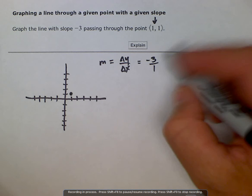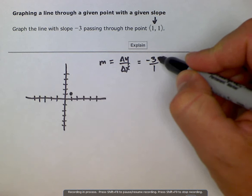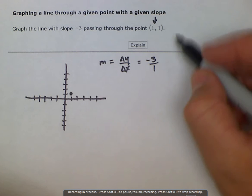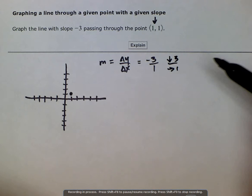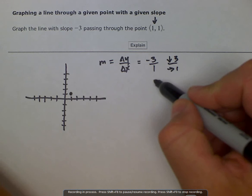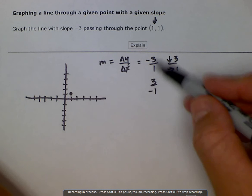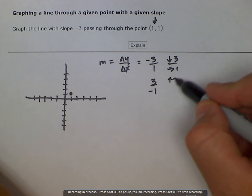So this gives us directions. It's saying as we move negative 3 in the y direction we need to move positive 1 in the x direction, so down 3 to the right 1. But also understand we can also do the reverse of that which is 3 over negative 1. These are both equivalent, these both equal negative 3. This would tell us to go up 3 and to the left 1.